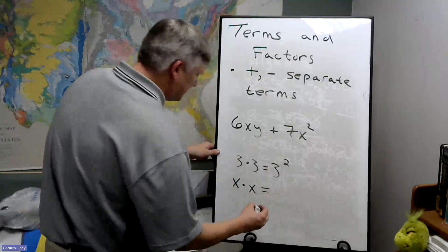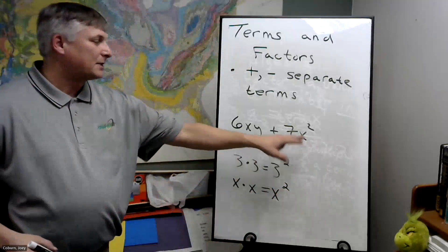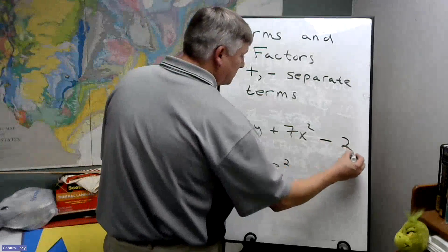X times X we would call X squared. That's what that means. And then say minus two.